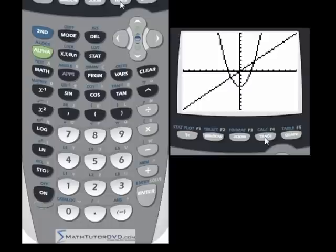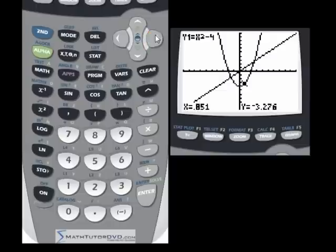Now you can hit the trace button, and you can go over here and try to get close, right? But you can see it's not going to be exact. It kind of skips right over it. So it's not going to be an exact thing. So what you need to do is go back into the calculate menu up here.